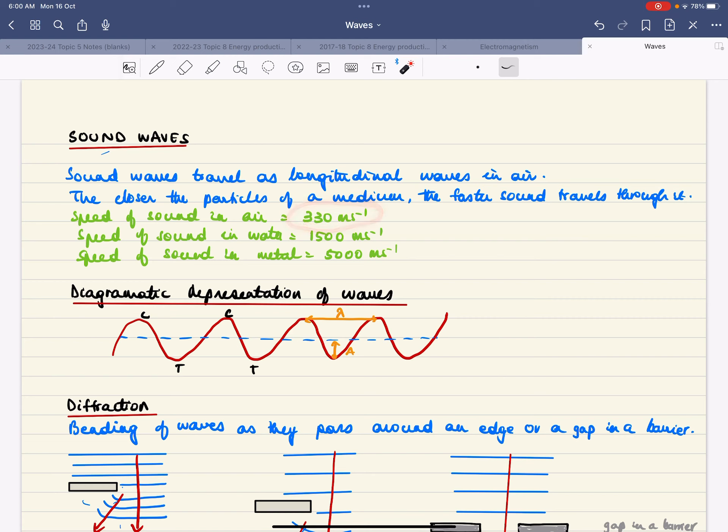But this can change depending on if the air is moist or if it's warm or if it's cold. The speed of sound in water is about 1,500 meters per second. And the speed of sound in a metal would be 5,000 meters per second. That's because the particles of the metal are much closer together.